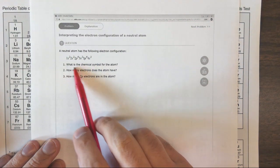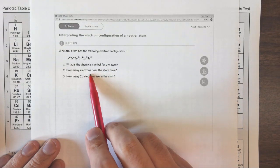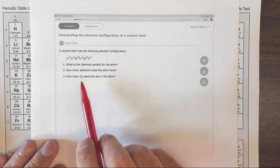In this question, we're given the electron configuration of a neutral atom. We're asked for the chemical symbol, the number of electrons, and the number of 2p electrons.